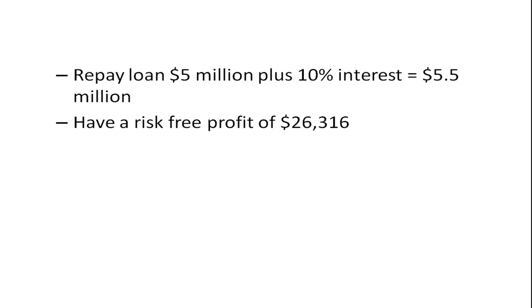In the real world, traders aren't foolish — if they see this opportunity they're going to exploit it, and that's going to cause the exchange rate to change until this risk-free profit is driven away. Because they're not using any of their own money and everything is known in advance, they can do very large transactions. This drives the exchange rate to adjust until the arbitrage opportunity is eliminated down to zero.